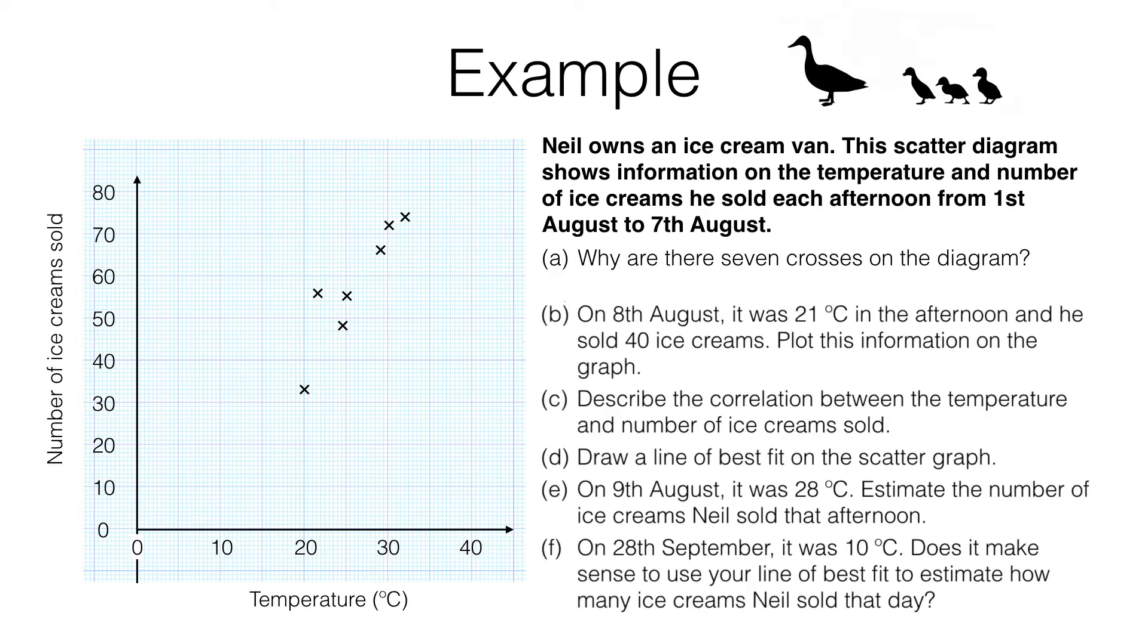Notice the information covers seven afternoons: the 1st, 2nd, 3rd, 4th, 5th, 6th, and 7th of August. Part A asks why there are seven crosses on the diagram.